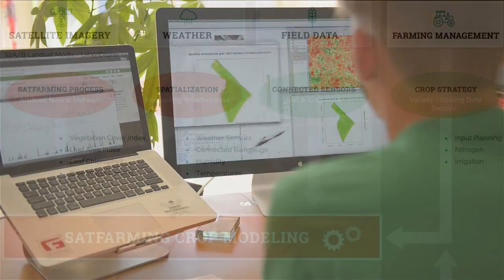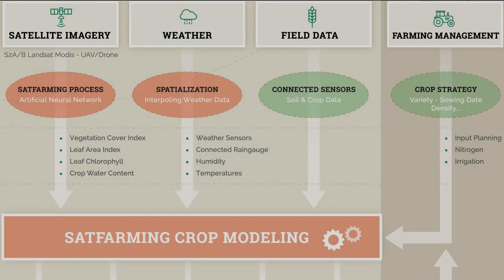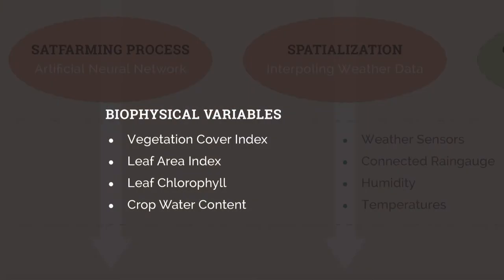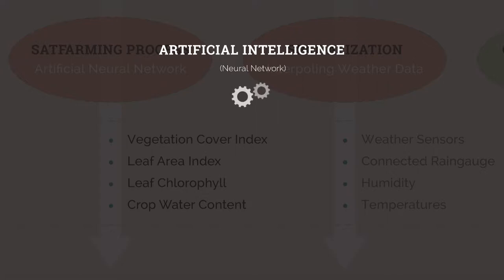The satellite images need to be processed before being usable. The main purpose is to convert reflectance data into biophysical variables: leaf area index, canopy chlorophyll content, and crop water content. This step uses techniques from artificial intelligence like neural networks, which yield better results than vegetation indices during inversion of reflectance spectra simulation models.